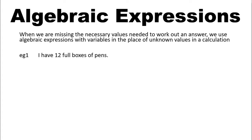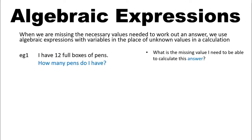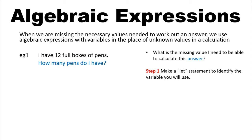Let's start with an example. If I have 12 full boxes of pens, how many pens do I have? Now, it would be impossible for me to answer this question because there's information missing. If we're setting up an expression for the number of pens I have, I can write a calculation and just substitute the missing information with a letter or symbol. The first step is to determine what information I need and what information is missing to be able to calculate the answer. Then we make a let statement to identify the variable that we will use to replace the number that we don't know.